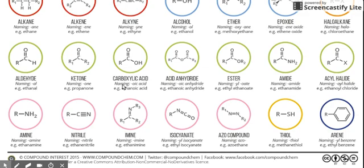Next is carboxylic acid, which is easy to remember because it contains the word acid — it's the only functional group in organic compounds with the word acid in its name. The name ends in O-I-C followed by the word acid. Ethanoic acid has two carbon atoms: one carbon has C double bond O and then there's OH on the other side. So COOH is carboxylic acid, and the name ends in O-I-C acid.